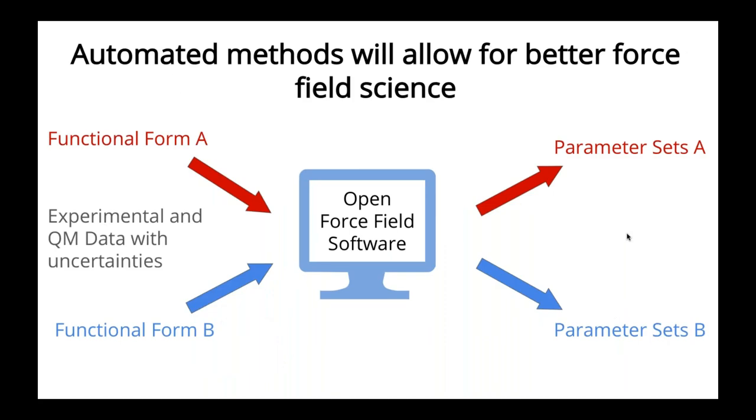This will allow for things that have been historically quite impossible with force fields, such as comparing functional forms. So for example, right now, if we have two different force fields that different people have created, not only could they have different functional forms, but they're also frequently trained with different types of experimental or quantum mechanical data, and they're created by different humans. So you're not only testing the functional form, but you're also testing the data and the people who made it, which doesn't really allow us to isolate the problem of which functional form is better for a potential problem.